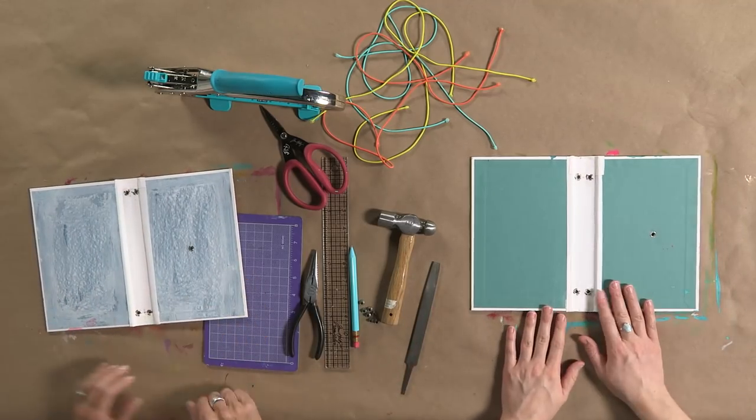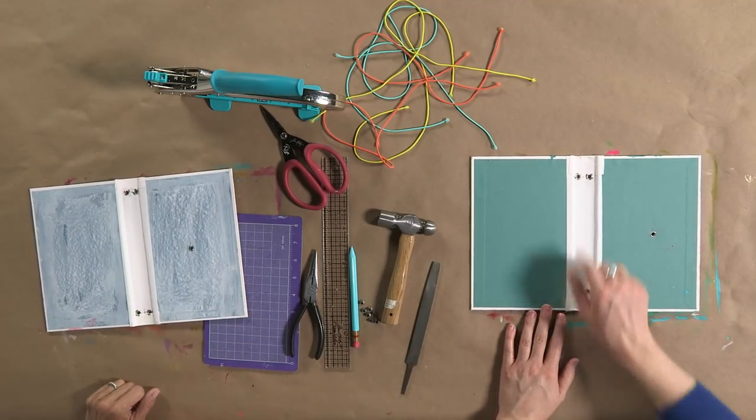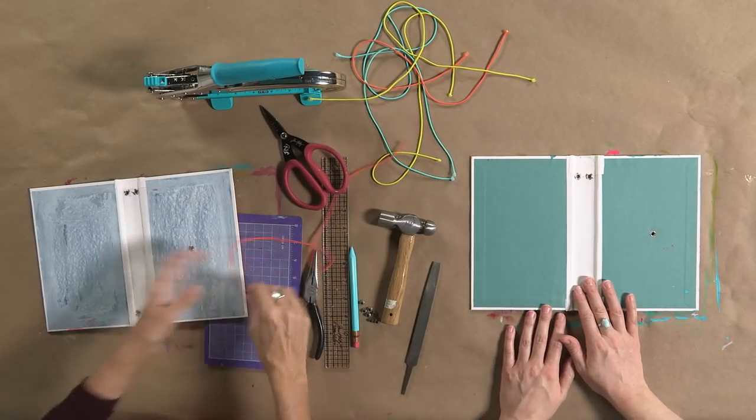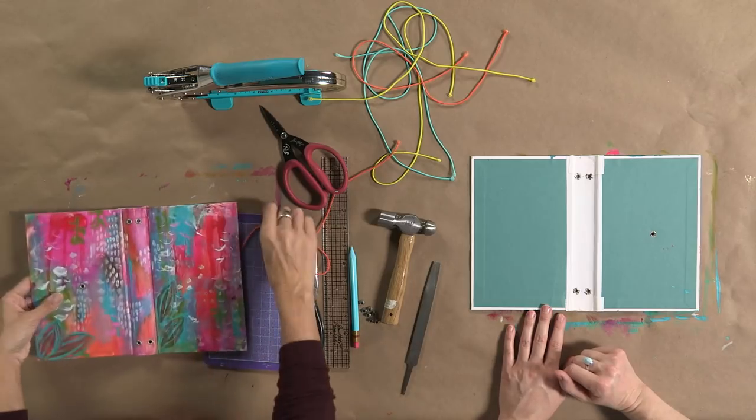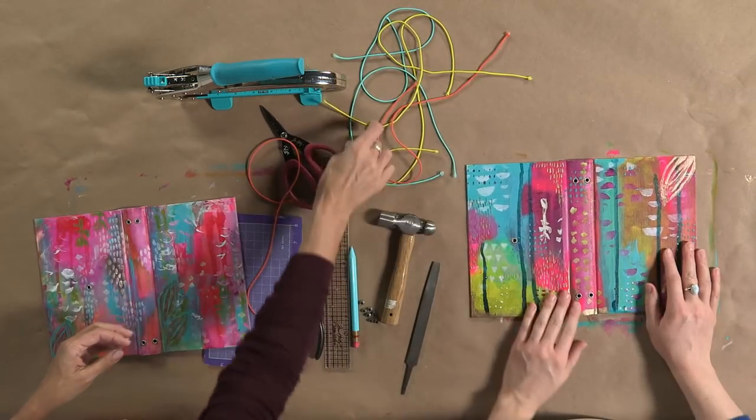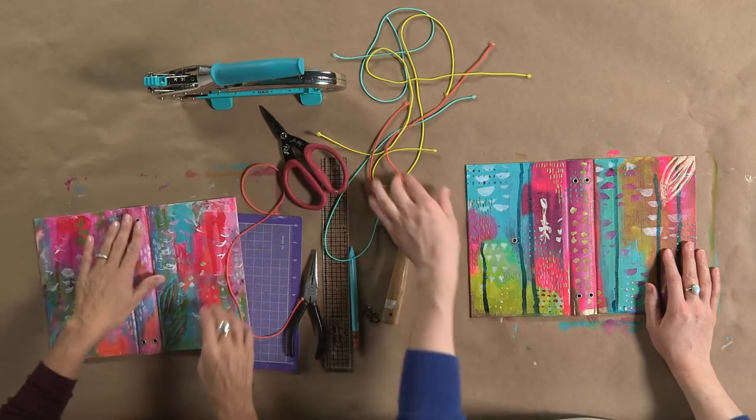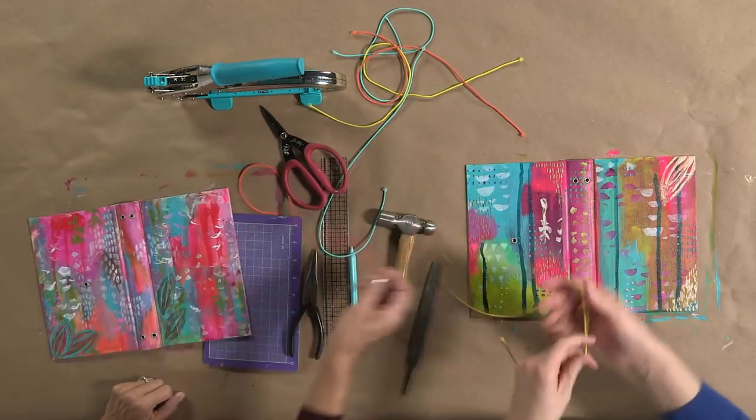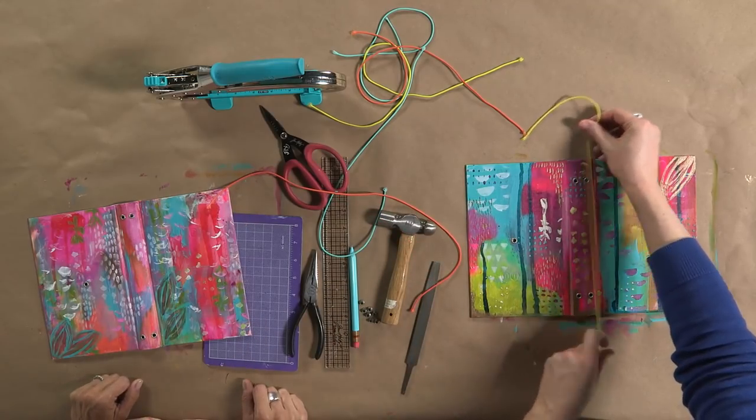So now what are we going to use these strings for? For the binding system we're going to take some elastic, and you can have it coordinate, you can use two different colors, whatever you think, and we're going to string one through each hole.